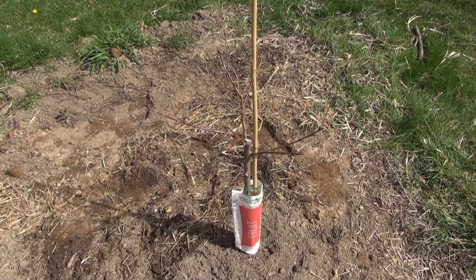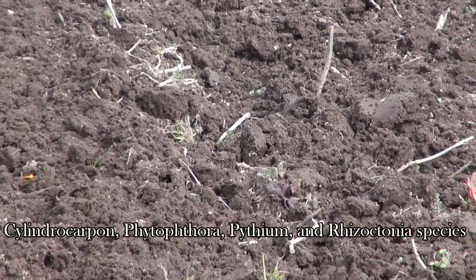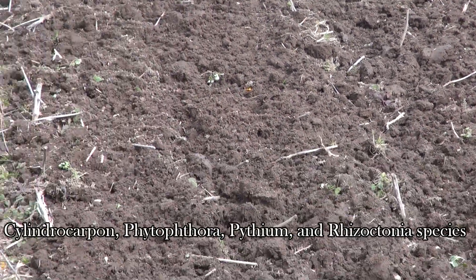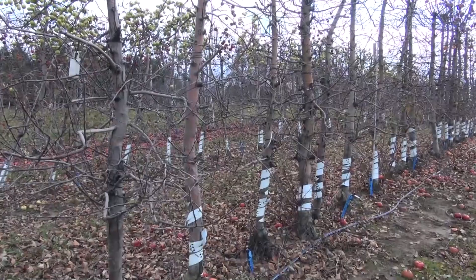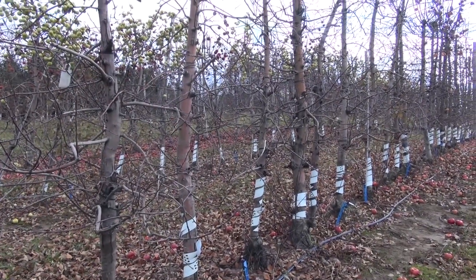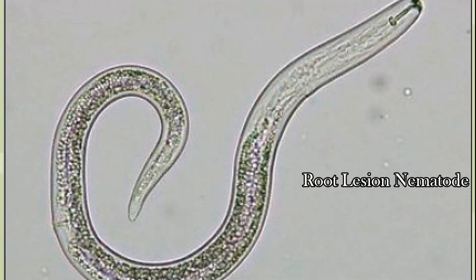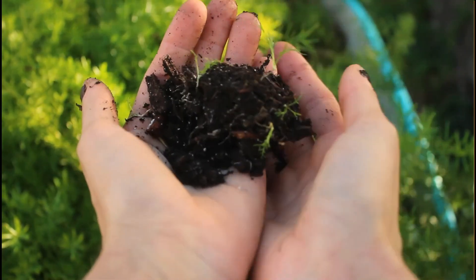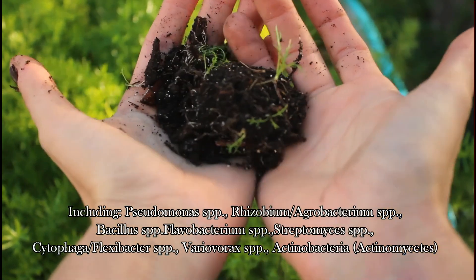The primary culprits behind ORD are soil-borne pathogens, including fungi such as Cylindrocarpon, Phytophthora, Pythium, and Rhizoctonia species. These pathogens attack tree roots, causing poor growth. Parasitic nematodes, such as root lesion and dagger nematodes, in addition to certain bacteria, also contribute to this disease complex.